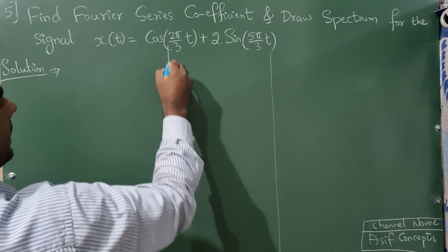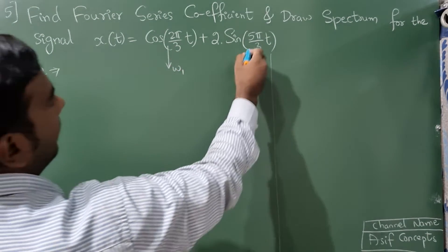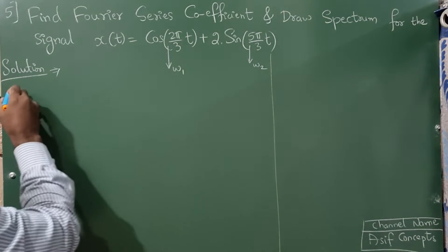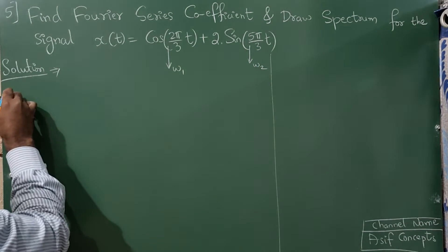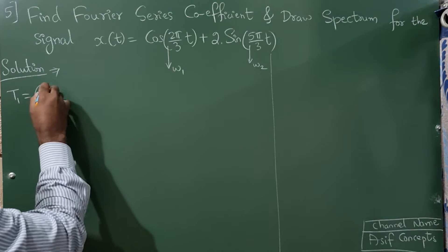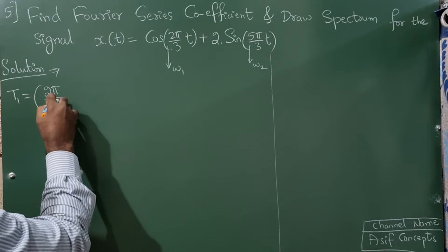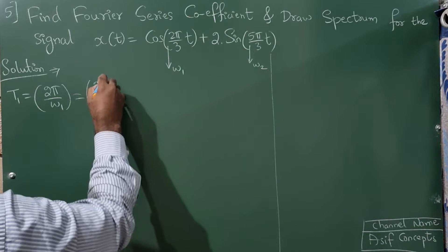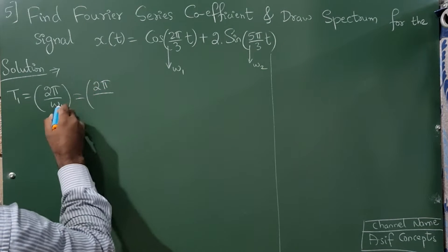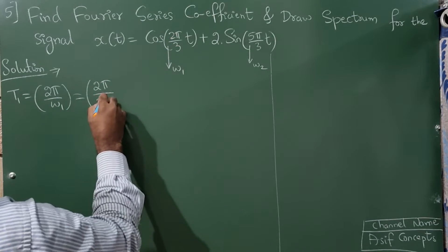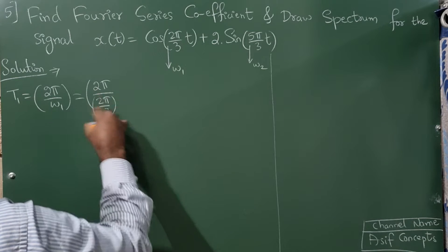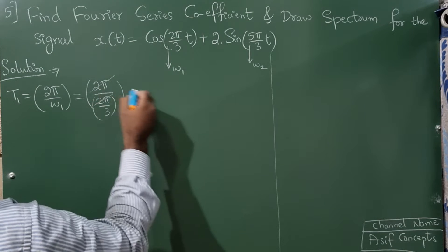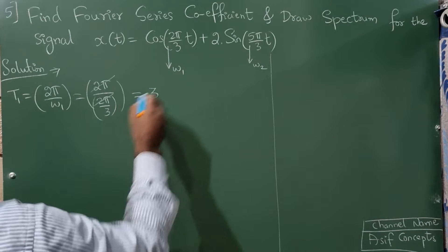Consider ω1 = 2π/3 and ω2 = 5π/3. The fundamental period T1 = 2π/ω1. So T1 = 2π / (2π/3) — the 2π cancels and 3 goes to the numerator, giving T1 = 3.